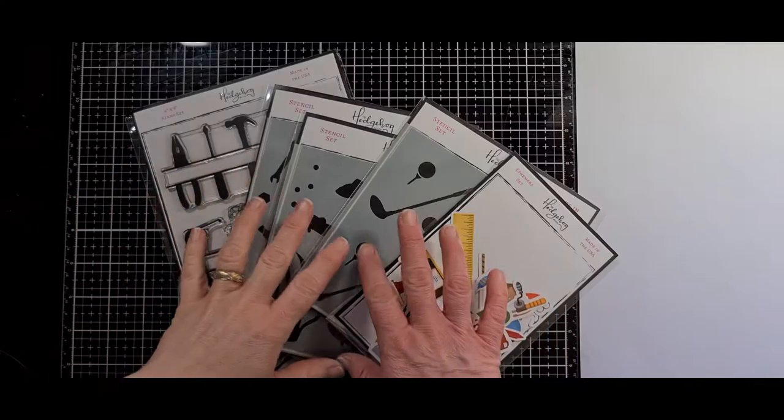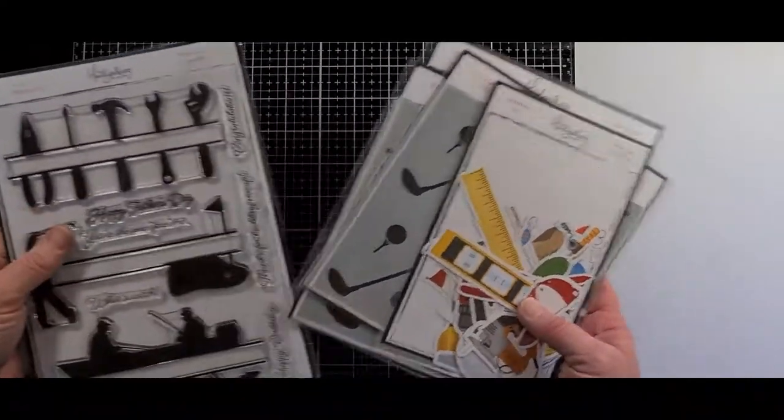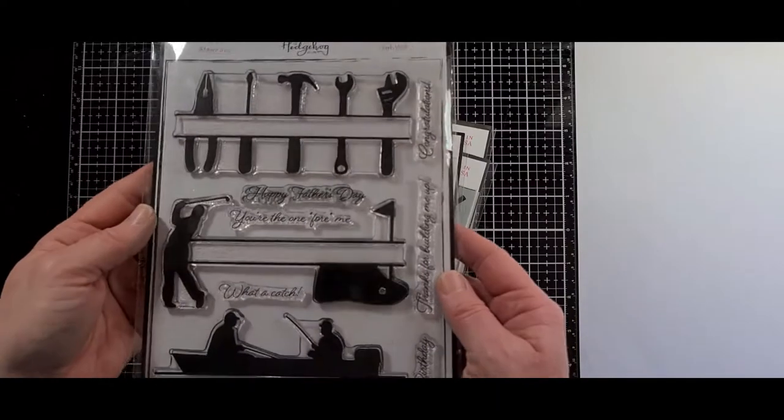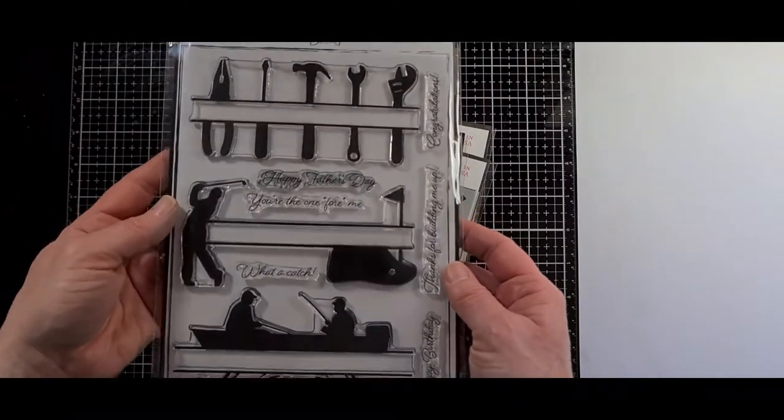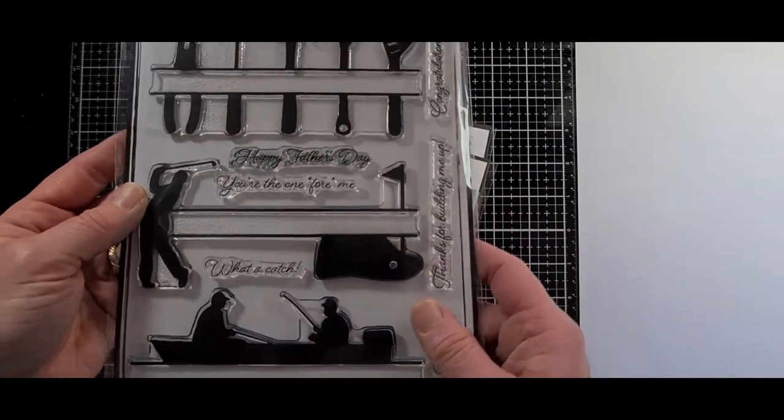Hi there, it's Michelle from Made by Michi. Thanks for joining me today. Today I'm going to be making three cards using the April subscription box from the Hedgehog Hollow. This month's box is masculine themed, so it's filled with lots of goodies to make masculine themed cards for all those men in your life.